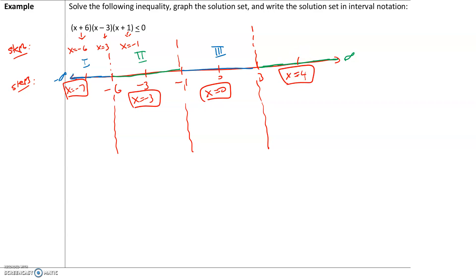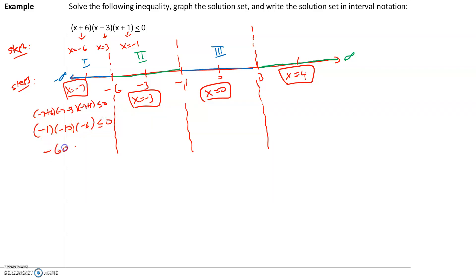Plugging in x equals negative 7: (negative 7 + 6)(negative 7 − 3)(negative 7 + 1). We want to check, is that less than or equal to 0? That gives negative 1 times negative 10 times negative 6, which is negative 60. Negative 60 is less than or equal to 0 — so this is a true statement.